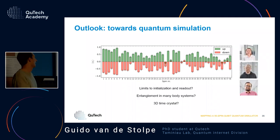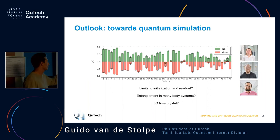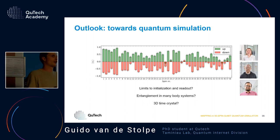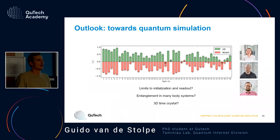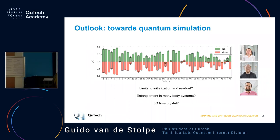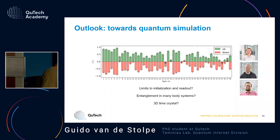The things we want to study on this system include investigating the limits of how to initialize and read out these spins to improve them, how entanglement spreads in many-body systems, and also maybe creating a 3D time crystal, which some theorists say is impossible — but we'll take up the challenge.